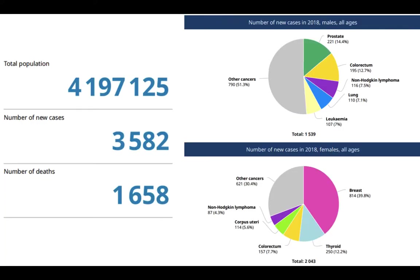Before we begin, let's take a look at some statistics from Kuwait, from the World Health Organization year 2018. In 2018, there were around 3,582 new cases of cancer out of the 4 million plus population. The most common types were prostate, colorectal, breast, and thyroid — with prostate and colorectal being most common in males, while breast and thyroid were most common in females.